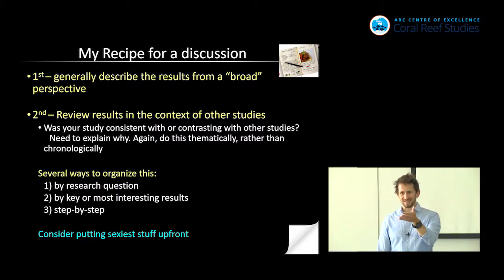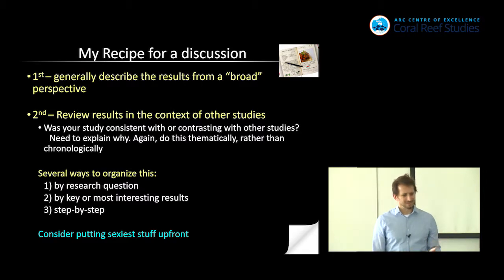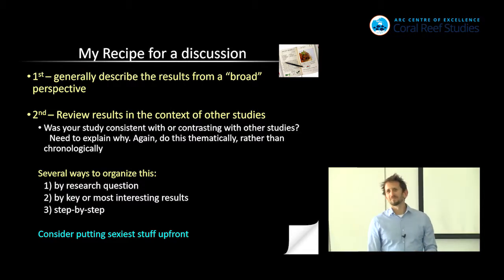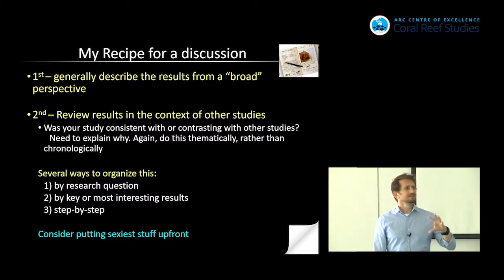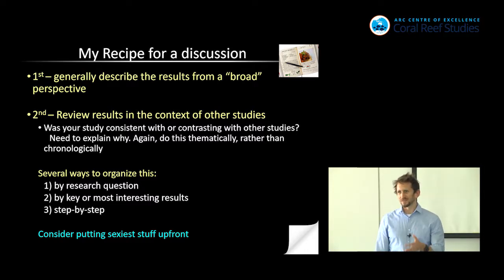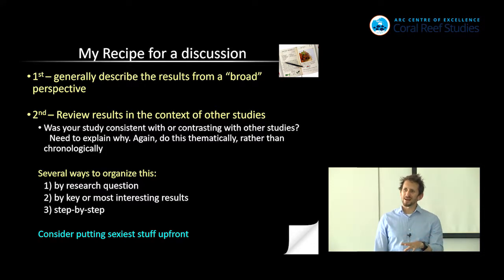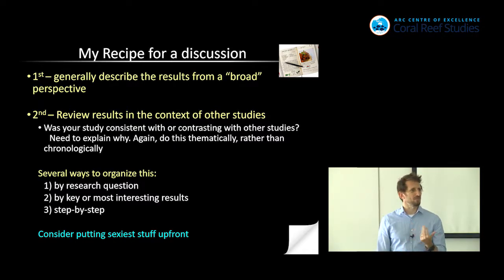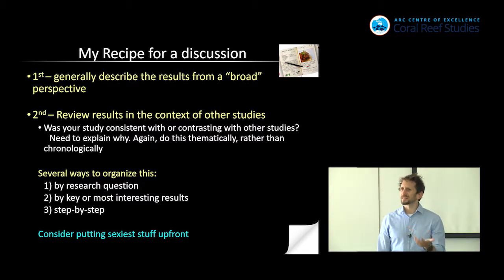Start with your most interesting result. Scientists like to sort of build up — that's a terrible way to read. That's why journalists never write like scientists: they know how to keep readership. You can also do it step by step, and sometimes that's the way you have to do it because understanding step two is totally contingent on step one. It's a more boring way to do it, but sometimes necessary. My preference, if it all worked out, would be to do it by the most interesting stuff, but sometimes it's relevant to do it by research question or by step. There's no right answer — just different ways of doing it.